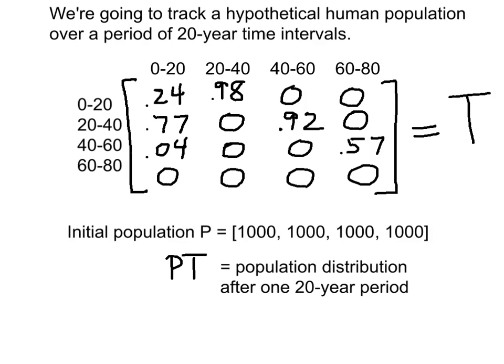What would you do if you wanted to know what the population distribution would be after 200 years? 200 years would be 10 20-year periods, so you would do P times T raised to the 10th power.